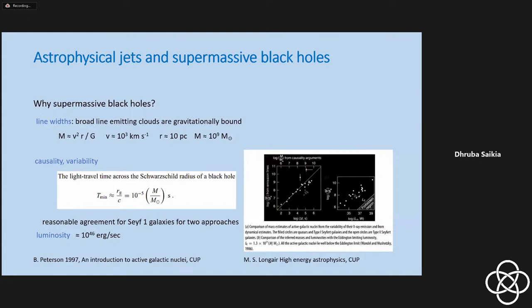We also have to contend with the fact that these jets carry a huge amount of energy. The luminosity of a source is typically — I've just taken a canonical value of 10 to the power of 46 ergs per second. How we understand these huge luminosities is something we'll deal with first. Then we look at jet sidedness, and then we look at some of the observational evidences that the launching of a jet, the presence of a supermassive object, and also the presence of an accretion disk are all intimately related.